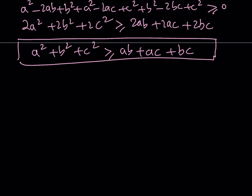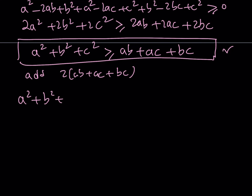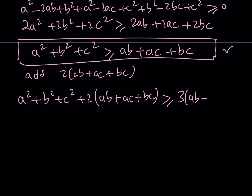Now let's take that original inequality: a squared plus b squared plus c squared is greater than or equal to ab plus ac plus bc. We're going to add two times (ab plus ac plus bc) to both sides and see what happens. Adding it to the left gives us (a plus b plus c) squared, since a squared plus b squared plus c squared plus 2(ab plus ac plus bc) equals (a plus b plus c) squared.